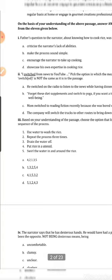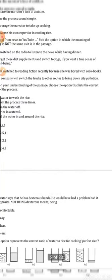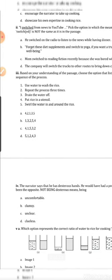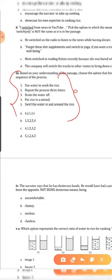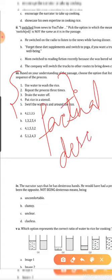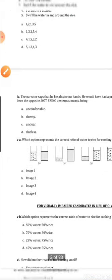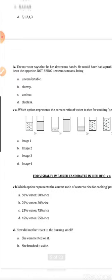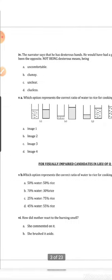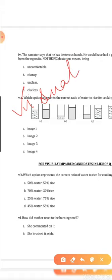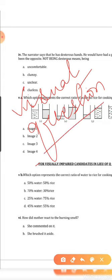Question 3 — 'Based on your understanding of the passage, choose the option that lists the correct sequence of the process.' This is related to the passage but not directly from it — it involves factual description, like the steps to cook rice. Factual description was taught till last year but has been deleted, yet it has appeared here within the comprehension reading skill. Question 5a is a visual question — 'Which option represents the correct ratio of water to rice for cooking perfect rice?'